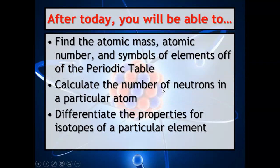After this lesson, you should be able to find the atomic mass, atomic number, and symbols of elements off the periodic table, calculate the number of neutrons in a particular atom, and differentiate the properties of isotopes of a particular element.